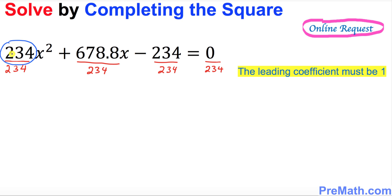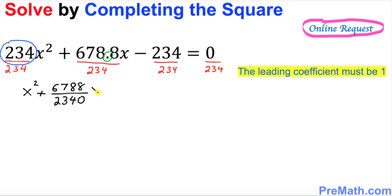So that means we're going to get 234 and 234, giving us 1x squared. Whenever you have a decimal, we want to remove it — you put a 0 on the denominator. So this part simply becomes 6788 divided by 2340, times x, minus 1, equals 0. Zero over anything is 0.